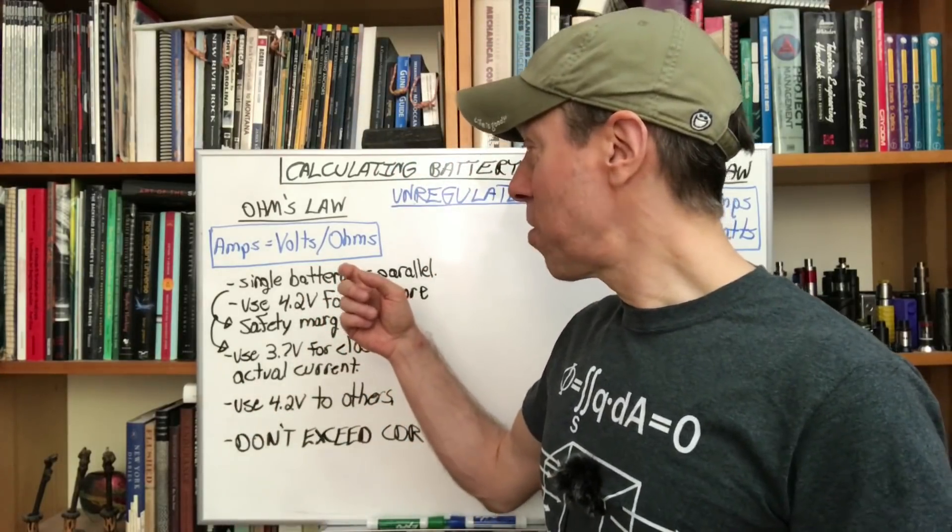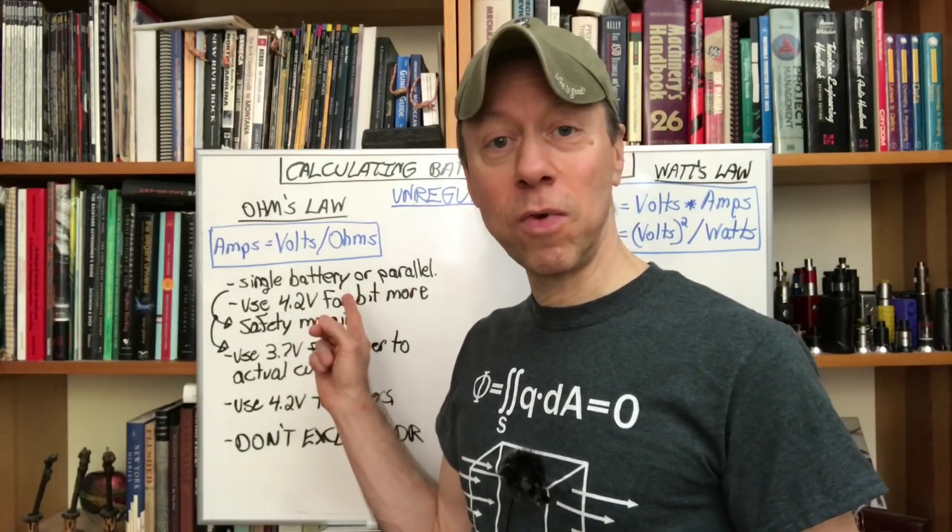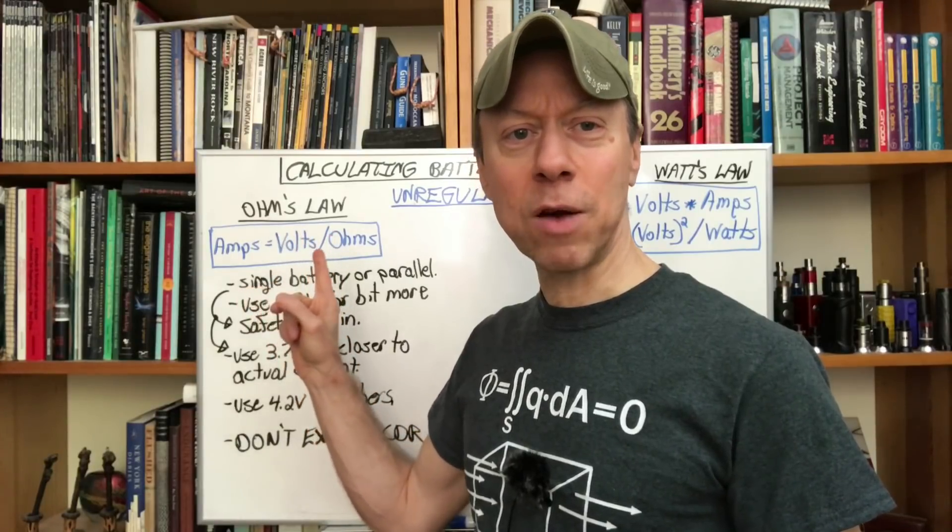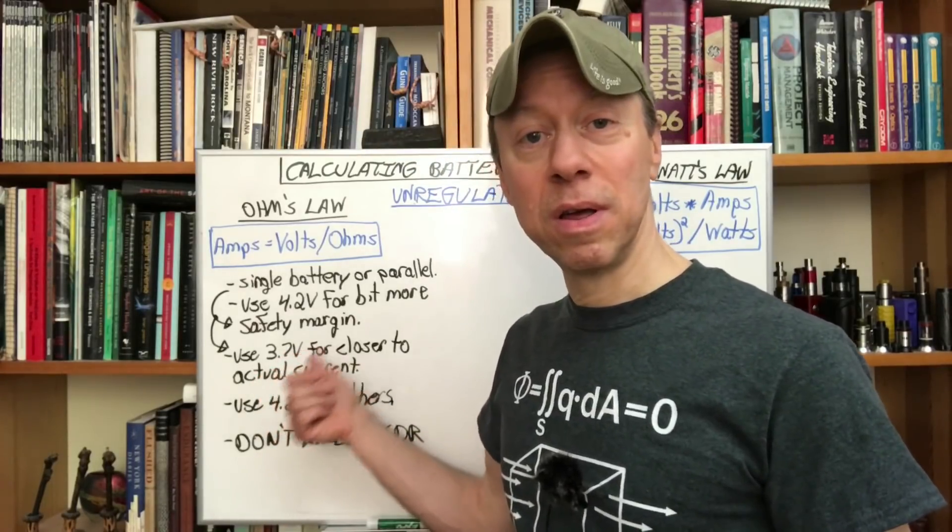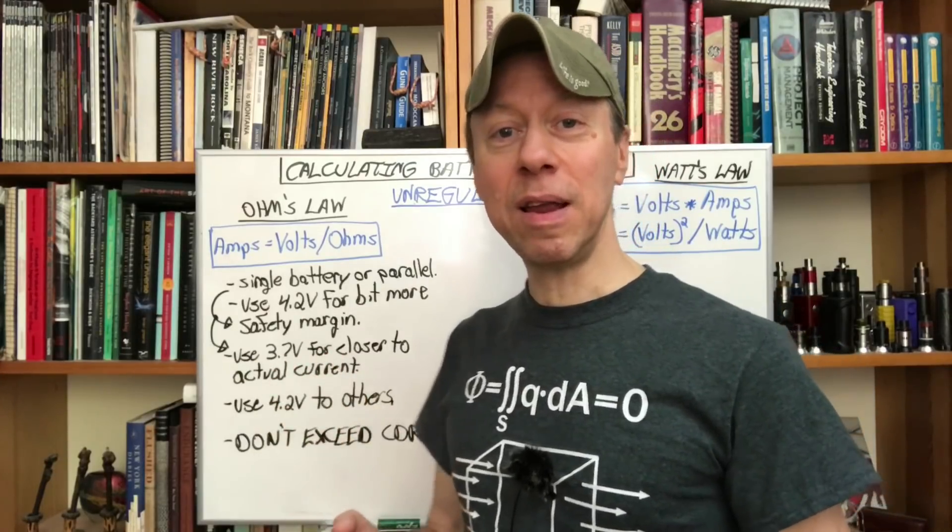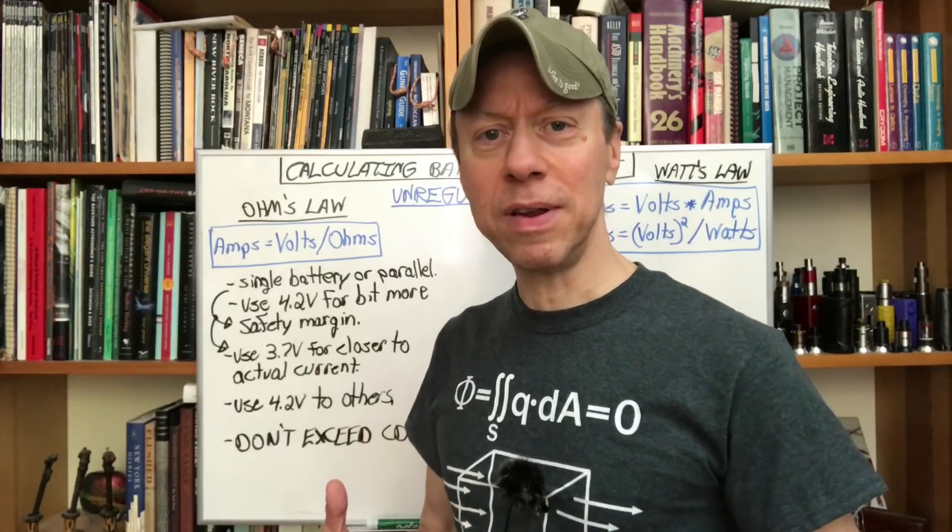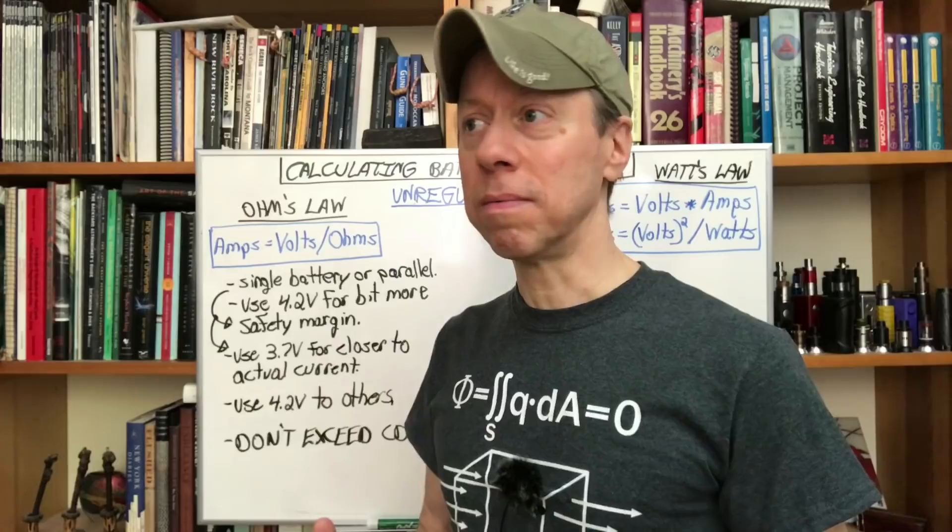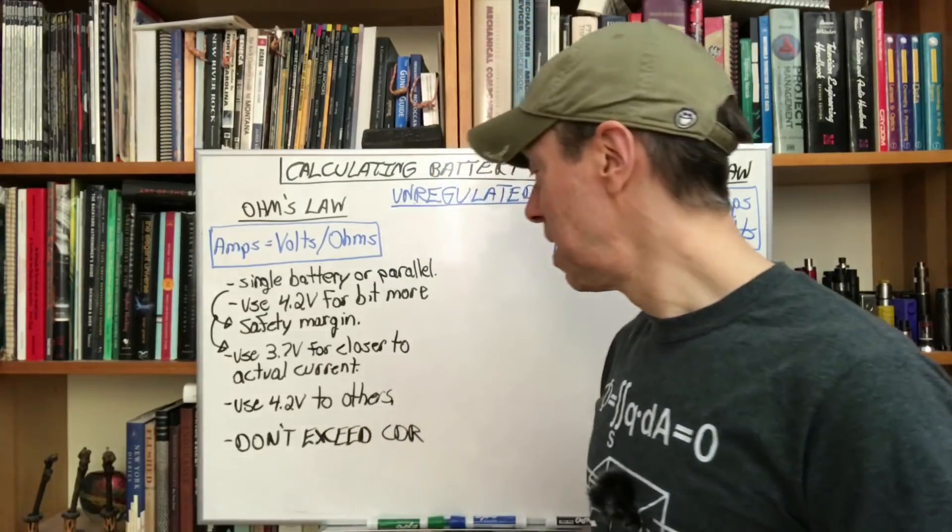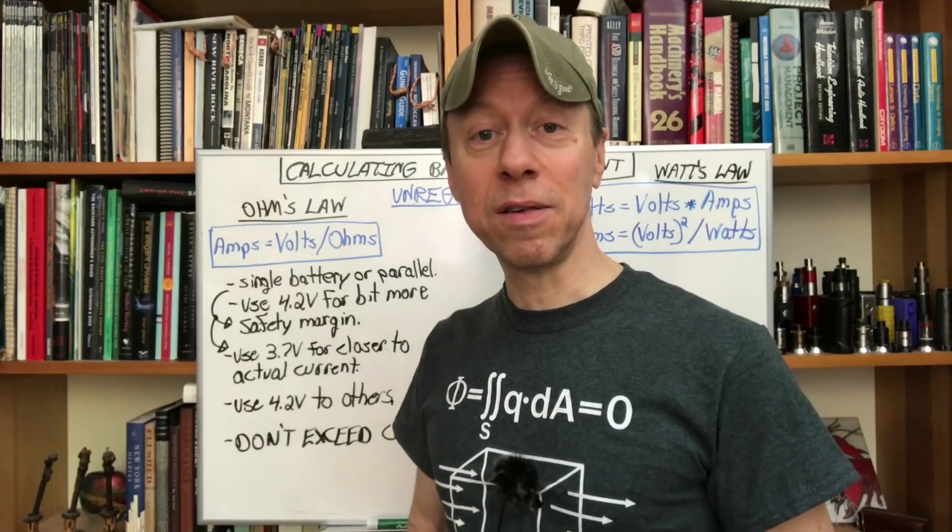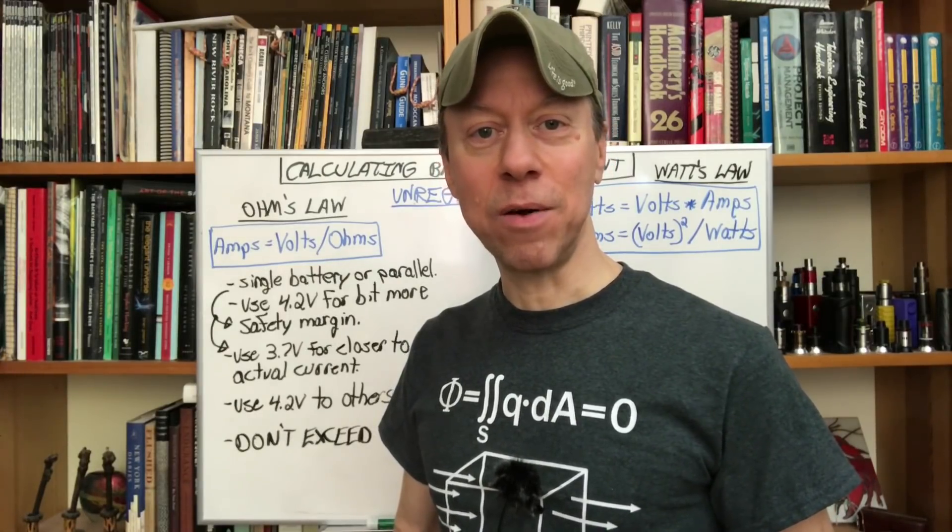I think it's important we're going to start off with single battery and that's the same thing as parallel. It's going to be 4.2 volts. You can use 4.2 volts for this equation, that gives you a little bit of a safety margin. If you want to get closer to the actual current use 3.7 volts but if you're recommending to anybody else how to calculate this current use 4.2 volts. As they get more experience and they don't need that safety margin, maybe they can use 3.7 to get closer to the actual voltage. As always don't recommend to somebody else that they exceed the continuous rating. Start them there, start them lower than that.